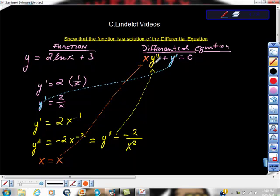That says here that it's x, so here's the x. y double prime is equal to this piece right here, so times negative two over x squared.